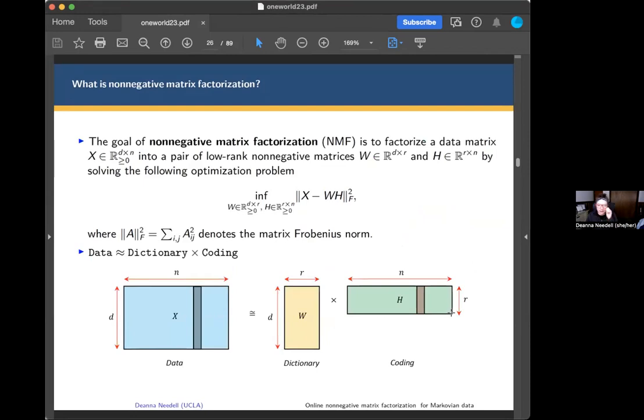So mathematically, the goal of NMF is to factorize the data matrix, which I'm now going to call X, which will be D by N, into a pair of low rank non-negative matrices W and H, which will be D by R and R by N. The very simple version is to minimize this optimization problem. We're minimizing the total Frobenius error between the factorization overall non-negative matrices of the correct size. We're going to call these the dictionary matrix, which contains the atoms, and the coding matrix, which explains how those atoms are built.